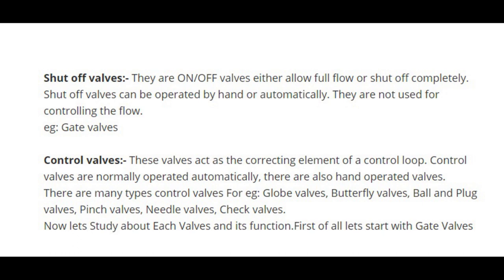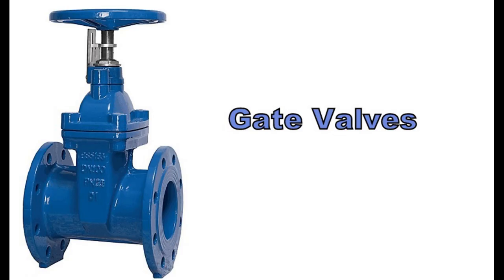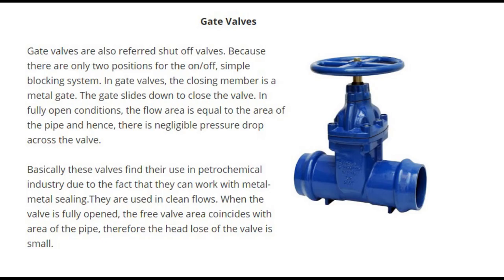Gate valves are also referred to as shut-off valves because there are only two positions: on and off — a simple blocking system. In gate valves, the closing member is a metal gate that slides down to close the valve. In fully open conditions, the flow area is equal to the area of the pipe, and hence there is negligible pressure drop across the valve.